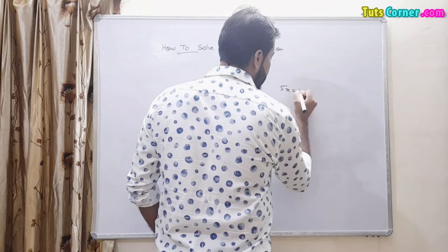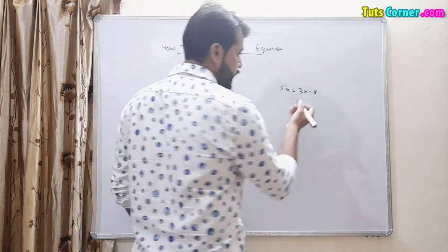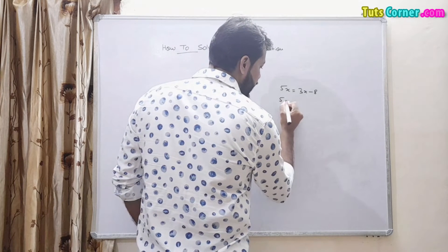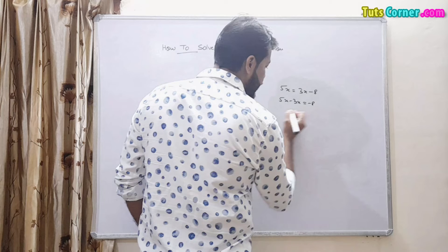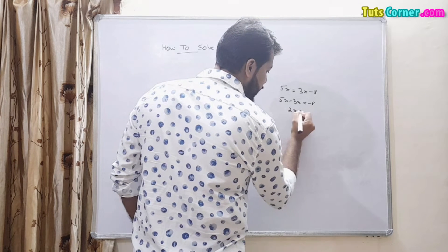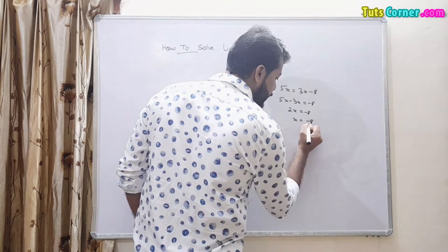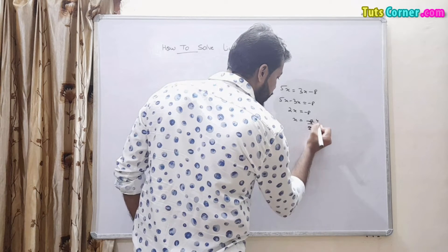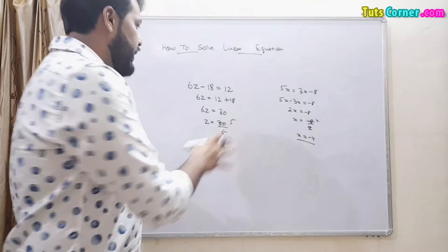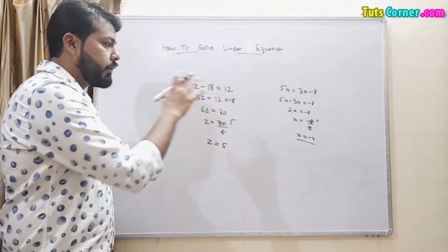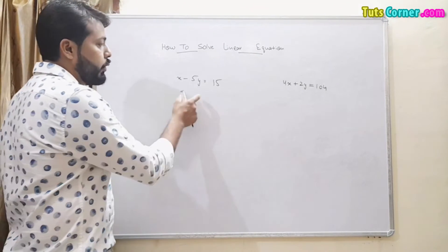One more example: 5x equals to 3x minus 8. We move 3x to the left hand side — 5x minus 3x equals to minus 8, so 2x equals to minus 8, and x equals to minus 8 upon 2, so x is minus 4. These are examples of linear equations with one variable.